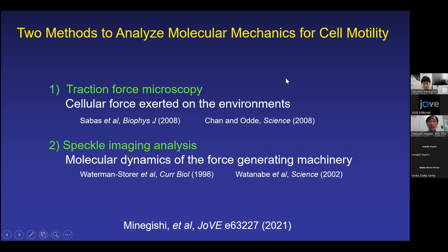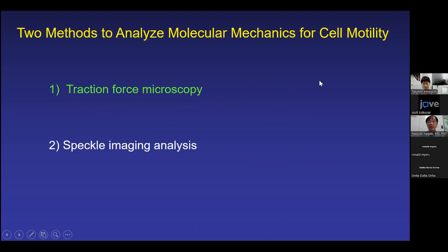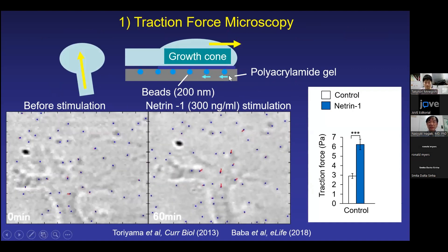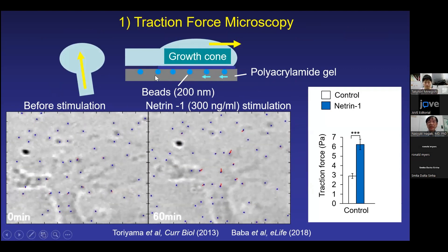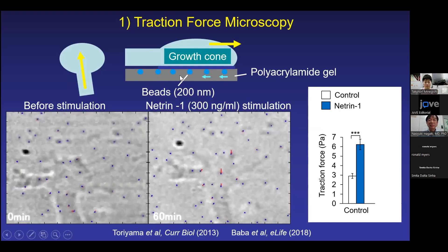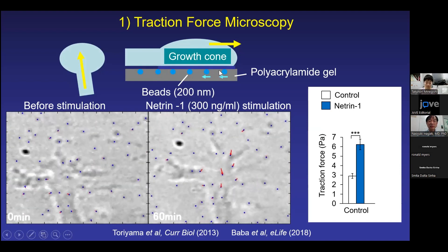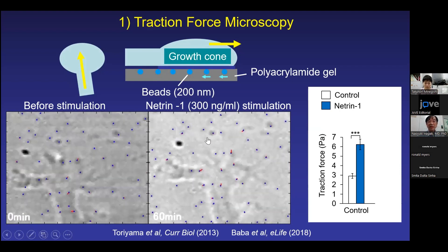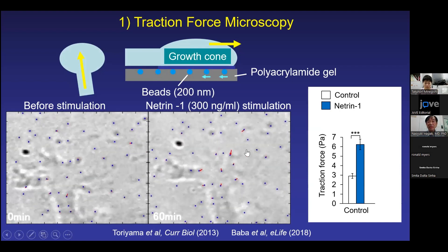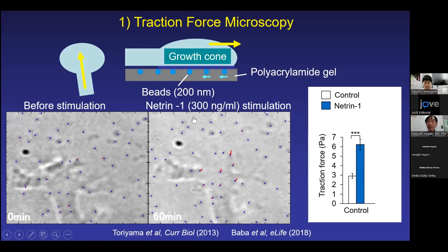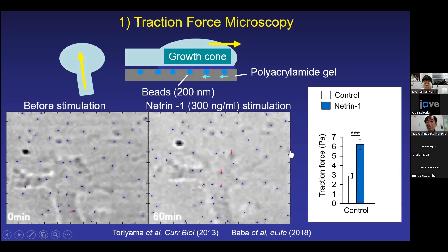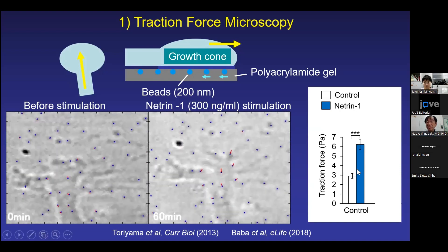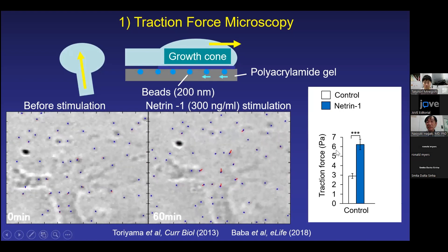Concerning the principle of traction force microscopy: neurons are cultured on polyacrylamide gel embedded with small fluorescent beads. The force generated by growth cones can be monitored by the deformation of the gel, which can be followed by the bead movement. The bead movement is increased by netrin stimulation. Because we know the elasticity of the gel, we can calculate the direction and amplitude of the force. Netrin stimulation increases the traction force from 3 to 6 Pa.